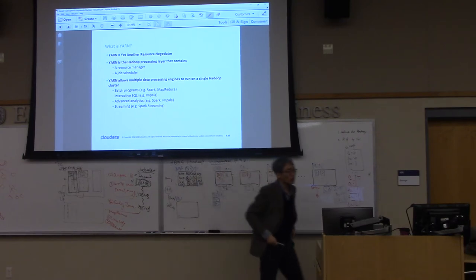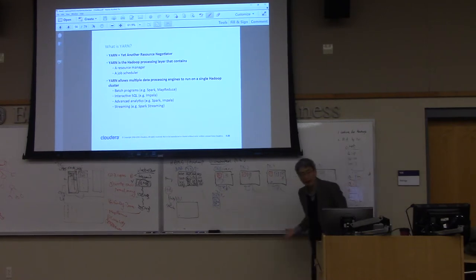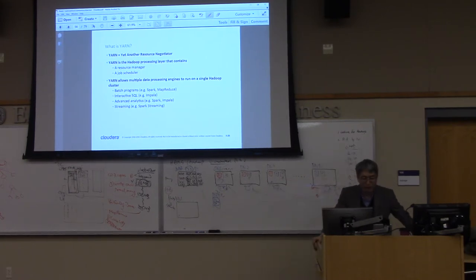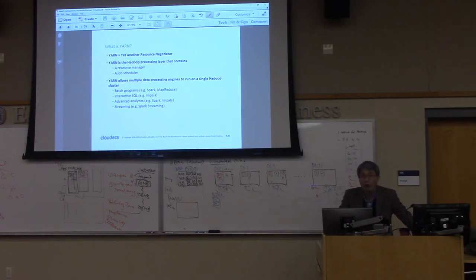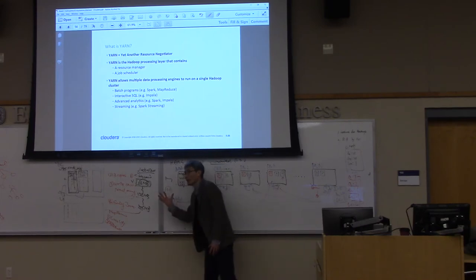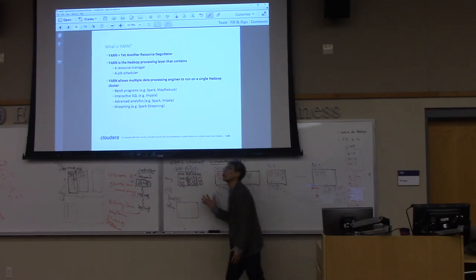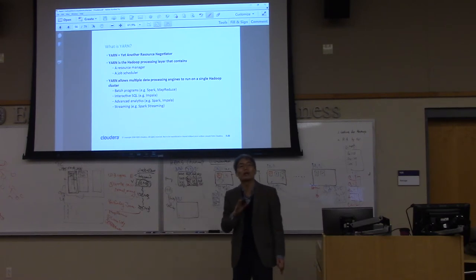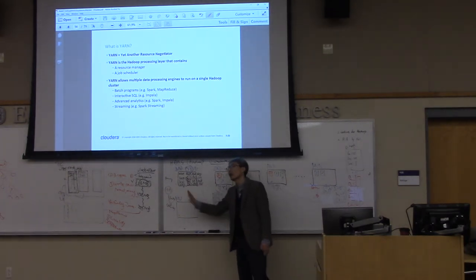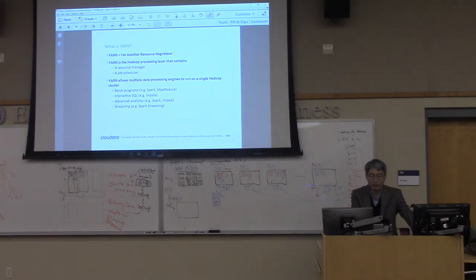The next version of Hadoop provides a resource manager — monitoring and managing the resources of the data nodes — called YARN: Yet Another Resource Negotiator. It is a resource manager and also a scheduler for multiple jobs. Using YARN, you can submit your MapReduce program and resources will be balanced. You can also submit the job without YARN. In our practice, we are not going to use YARN — we will use just the old traditional MapReduce way.